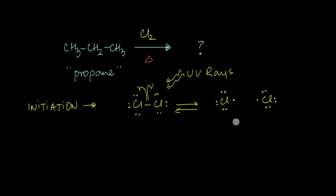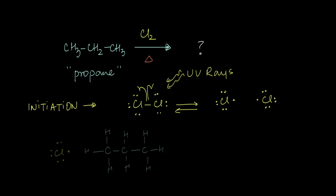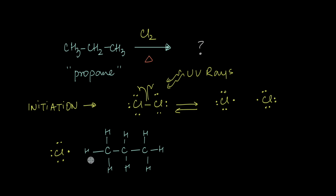One of the other things that might happen is that this chlorine radical, instead of colliding with another chlorine radical, can actually go ahead and collide with propane molecules present in the mixture. So this chlorine radical can collide against a hydrogen of a propane molecule, and because it's very reactive, it can react with that hydrogen atom.